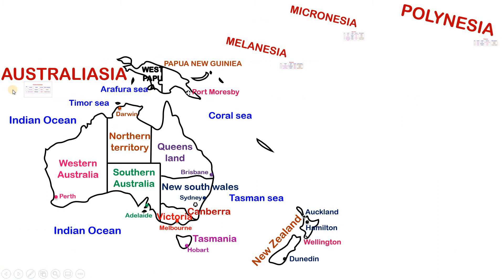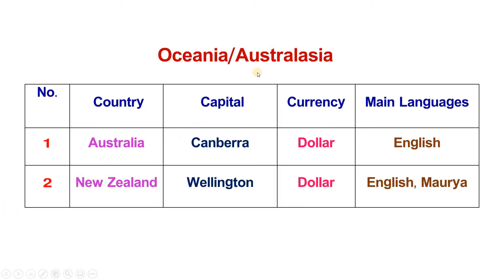Now let's see Australasia, Melanesia, Micronesia, and Polynesia. The Australia continent is divided into four types. First, Australasia, also called Oceania. There are two countries in Australasia: Australia, with capital Canberra, currency dollar, and main language English; and New Zealand, with capital Wellington, currency dollar, and main language English.